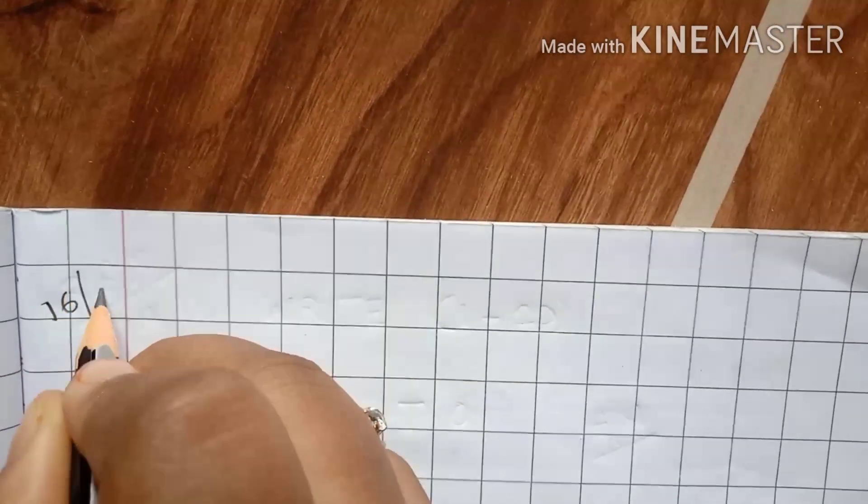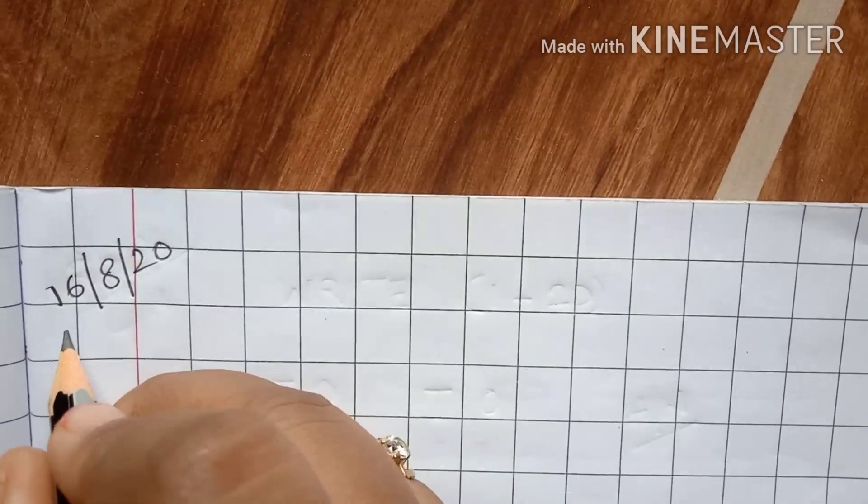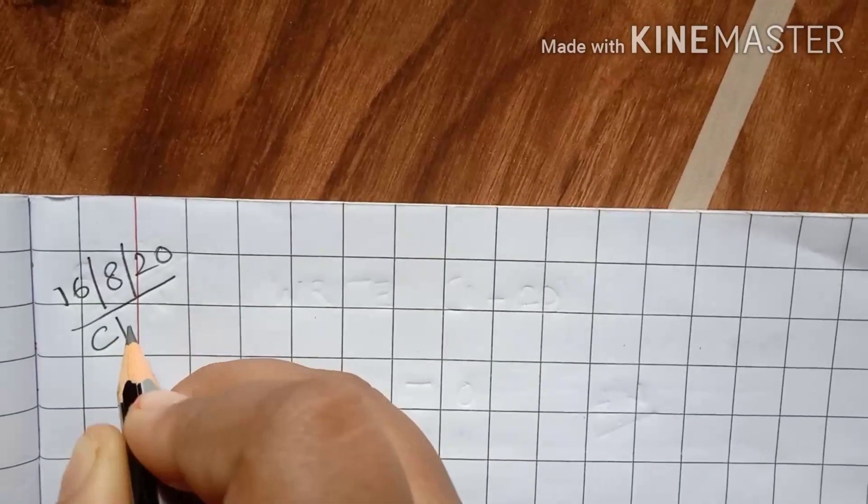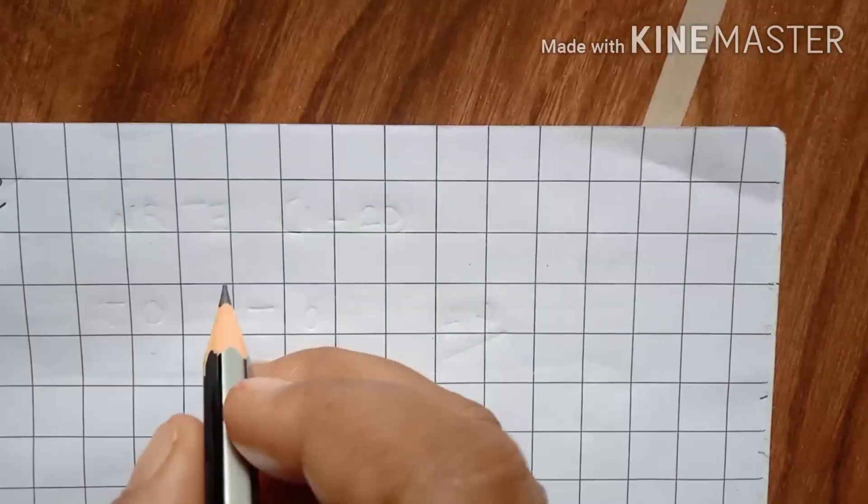You have to take out your maths page from your school copy, pencil and an eraser. So let's begin. First you will write today's date which is 16-8-2020. Then write here CW which means classwork.